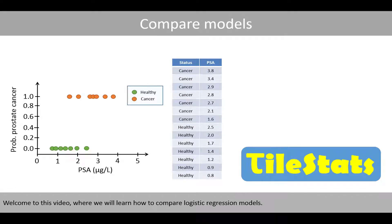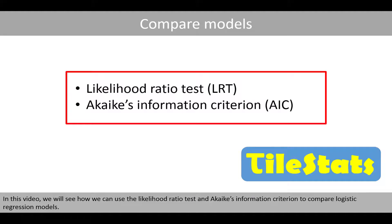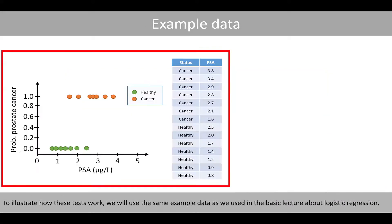Welcome to this video where we'll learn how to compare logistic regression models. We'll see how we can use the likelihood ratio test and Akaike's information criterion to compare logistic regression models. To illustrate how these tests work, we'll use the same example data as we used in the basic lecture about logistic regression.